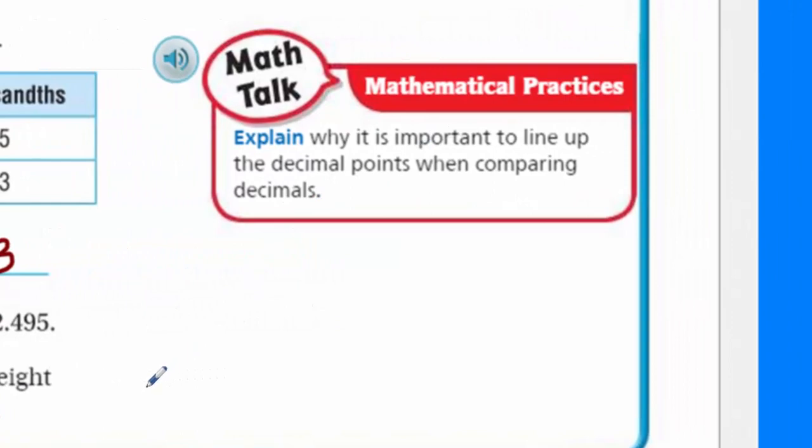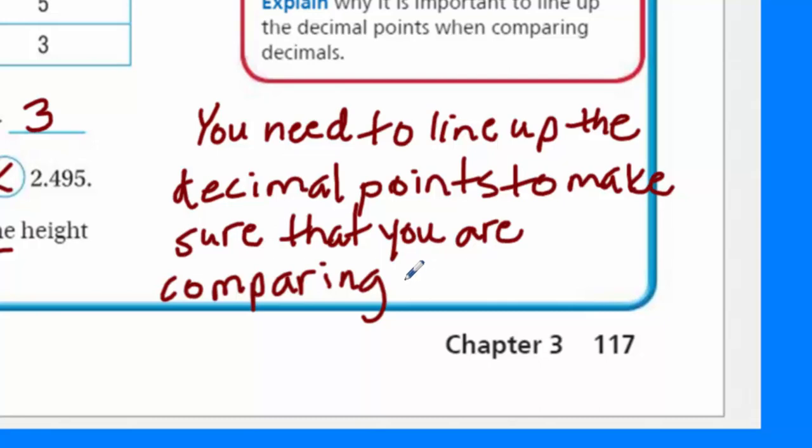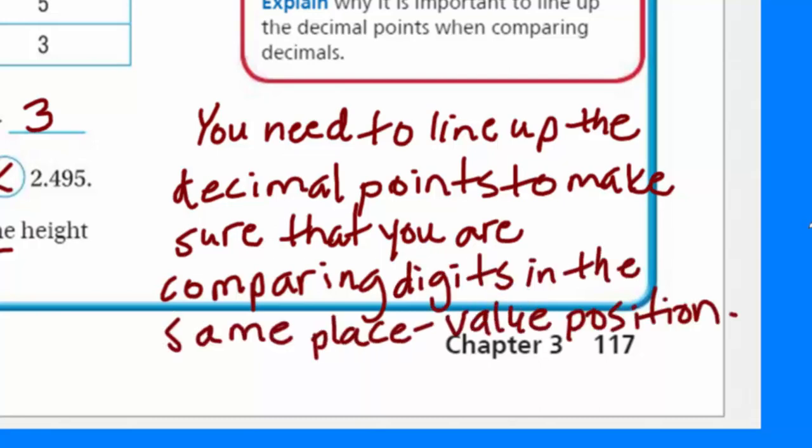Now, Math Talk explained why it is important to line up the decimal points when comparing decimals. Hmm. Well, I would say, I mean, you need to line them up, right? You need to line them up in the decimal points so you make sure, I suppose, that you're comparing digits of the same place value position. You see, if you didn't do that, then, you know, your answer is not going to be correct. See, a 2 in the ones place is only has a value of 2. But a 2 in the tenths place would have a value of 0.2, two tenths. So it really is important to line them up for that reason. All right? Maybe I'll draw some notes about that. Okay, there you go. I tried to make it as neat as possible for you.